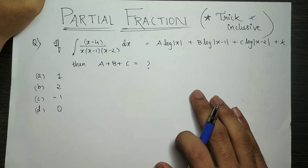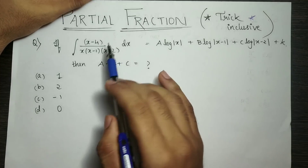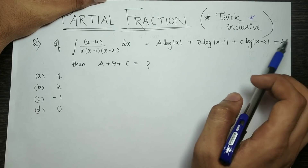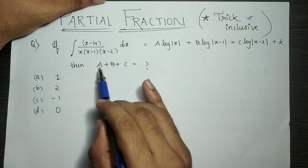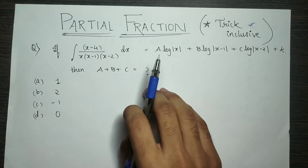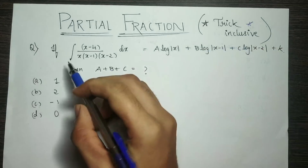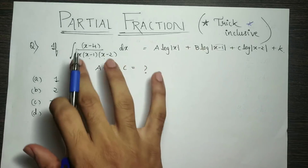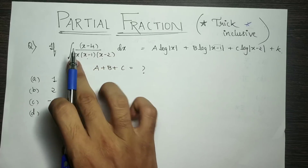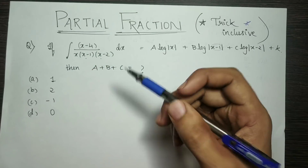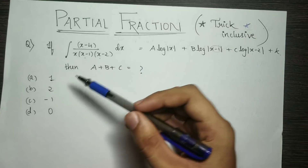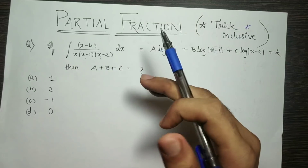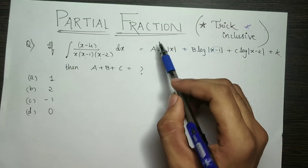The question is: if the integral of (x minus 4) divided by x into (x minus 1) into (x minus 2), dx equals a·log x plus b·log(x minus 1) plus c·log(x minus 2) plus constant k, then find the value of a plus b plus c.